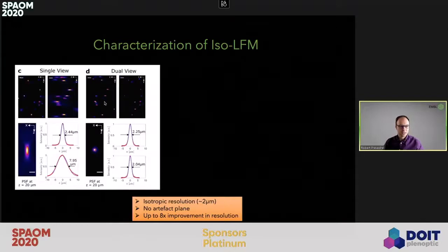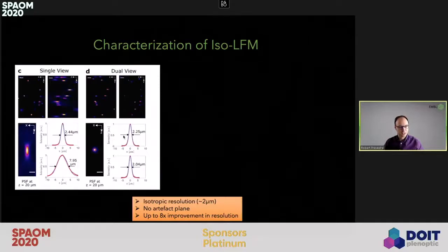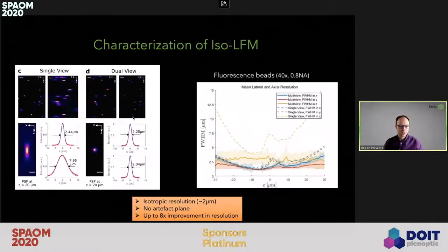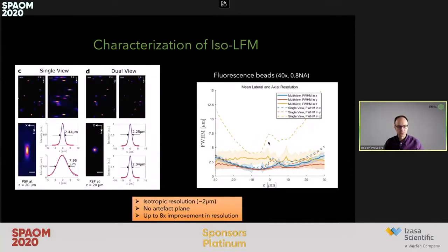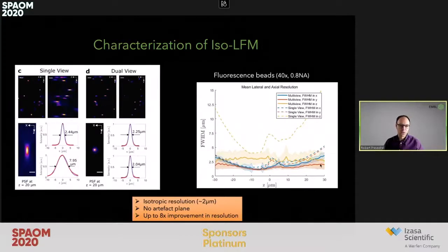Comparing a single objective light field — a typical epifluorescence light field microscope — to the same beads imaged with our dual-view ISO-LFM approach, there is no real difference in the lateral resolution, but the axial resolution is dramatically improved by a factor of four, really reaching the isotropic regime. Even more importantly, we avoid the typical problem where axial resolution gets much worse with increasing imaging depth. In our dual-view approach, we have an almost constant and isotropic resolution throughout the imaging volume, and there is no artifact plane.